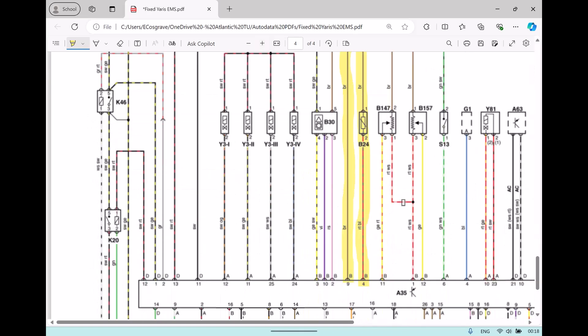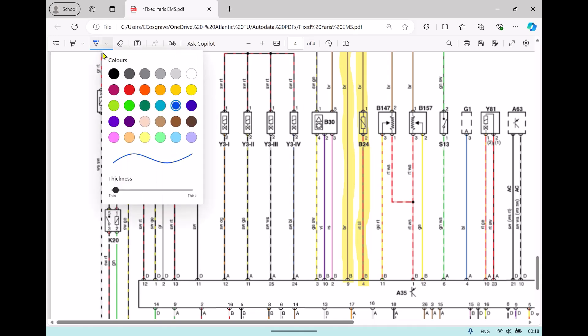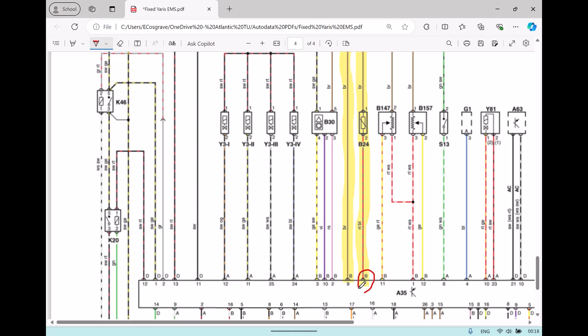We'll just zoom in a bit now so we can get a better look. So B4 on the ECU, that's for the signal wire, and B9 on the ECU, that's for the sensor earth.